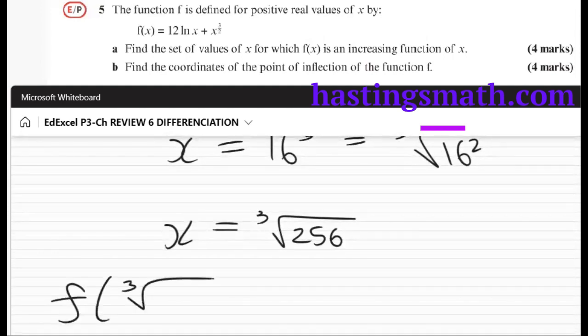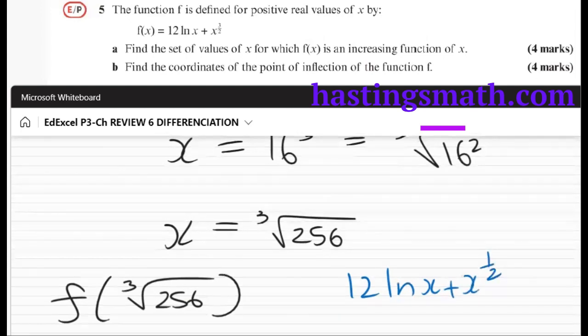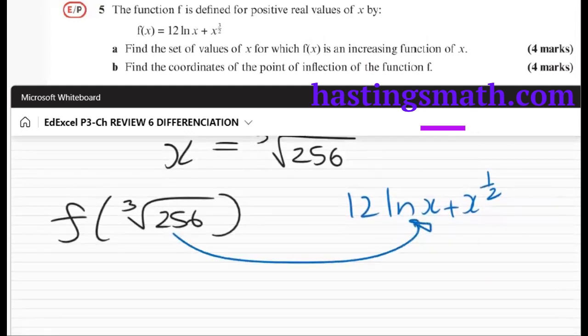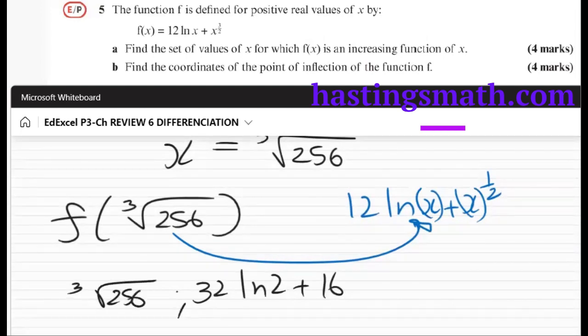Okay, this is our x. And to get our corresponding y for the point of inflection, you need to sub this in to your original equation. The original equation was f(x), so it would be 12 ln x plus... let me just make sure I'm giving you the correct information. And according to the mark scheme, when they sub this in for x, we get a point of inflection with the corresponding y of 32 ln 2 plus 16. So here's our point of inflection. You should do the full working there.